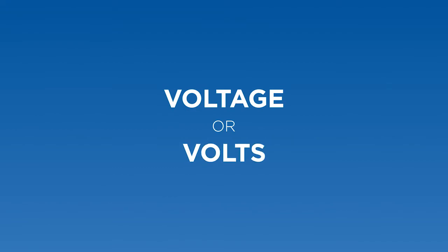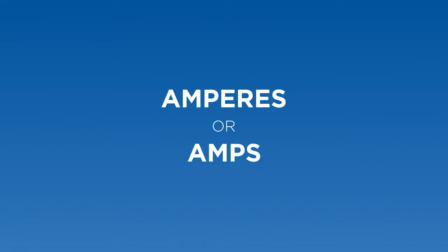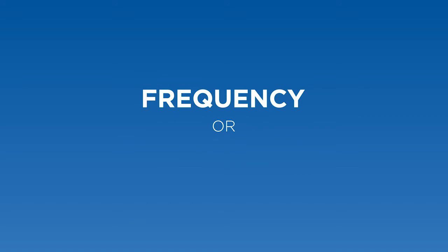Today we're going to be discussing common terms used in the electrical industry for electricity and electrical products. There are many terms used in the industry, but the three most common are voltage or volts, amperes or amps, and frequency — commonly known as Hertz, as that is the measurement of frequency.